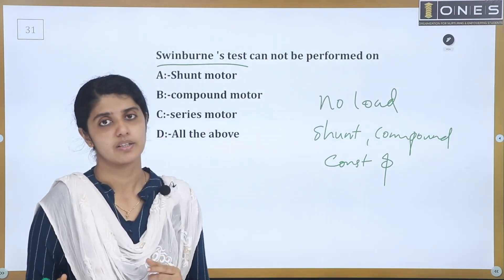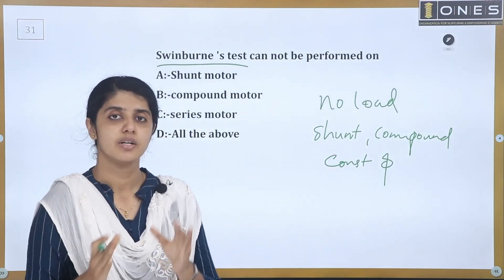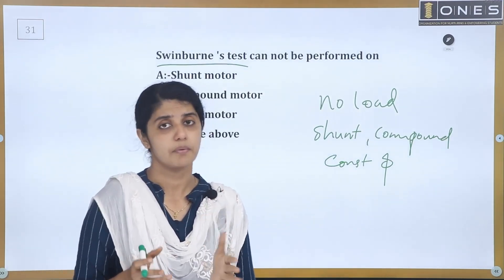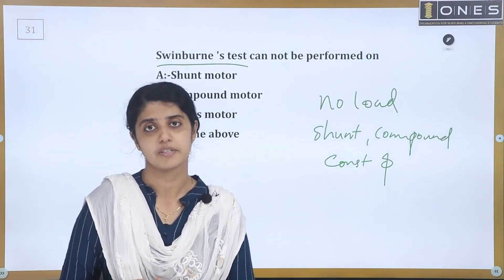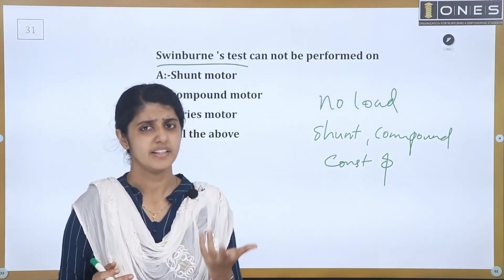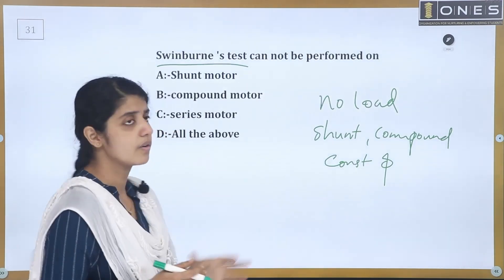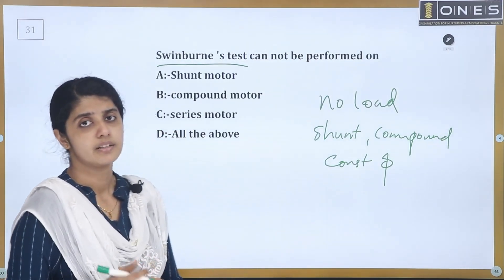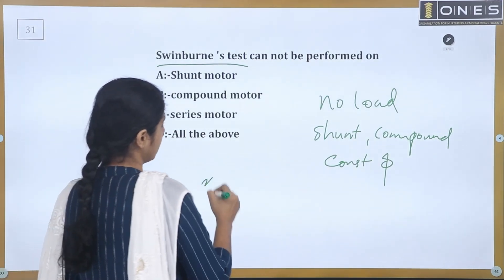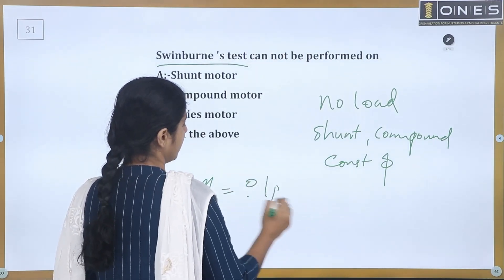Then we have copper losses. If we calculate the copper losses for the constant flux machine, we can determine them because the armature resistance values matter when calculating the total losses.